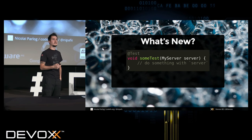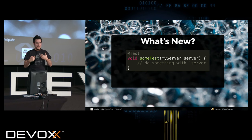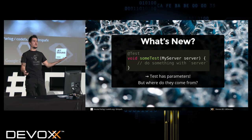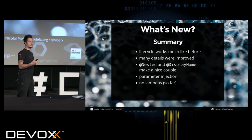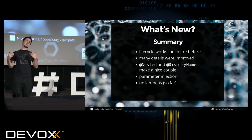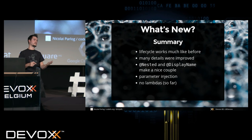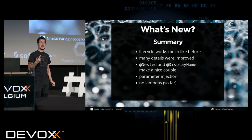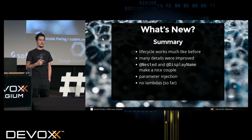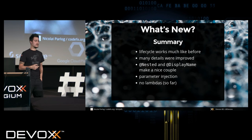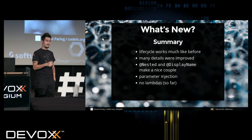What's new here? The parameter — exactly. I called it 'my server' to make clear this is a class that I provided. So how can the test have parameters? How would JUnit know which instances to provide? We'll see that soon. So what have we seen in the basics? Lifecycle methods work like before, just renamed. Many details were improved — like not having to use 'public,' or the problems with expected exceptions. Nested and display name make a really nice way to structure tests in a very readable way, especially in tool output. Parameter injection exists, and we haven't seen lambdas yet, which is a little disappointing, since JUnit 5 used to be called JUnit Lambda.